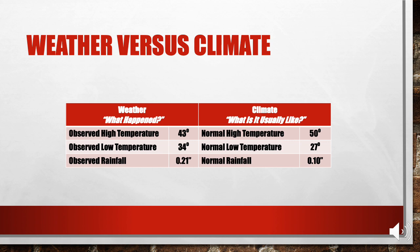Let's take a look at some actual weather and climate data. The weather conditions featured on the left side of the table occurred in Fayetteville, Arkansas, on February 19, 2019. The high and low temperatures were 43 and 34 degrees, respectively, and 21 hundredths of an inch of rain fell. These temperatures and rainfall actually happened on that date. The right side of the table shows what conditions are usually like in Fayetteville on February 19, using the 30-year averages. The normal high and low temperatures are 50 and 27 degrees, respectively, with a tenth of an inch of rain. If you compare the weather conditions to the climate normals on this date, Fayetteville saw a colder-than-normal high temperature, a warmer-than-normal low temperature, and more rainfall than normal on February 19, 2019.